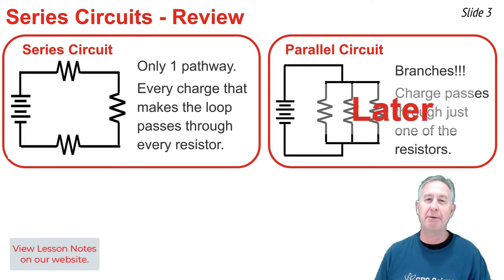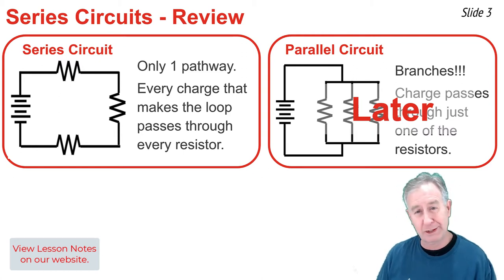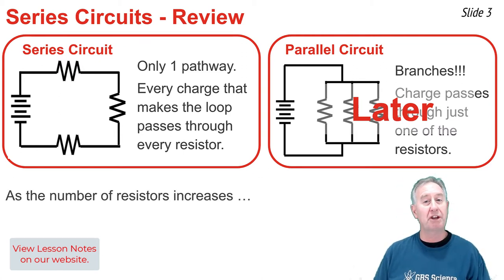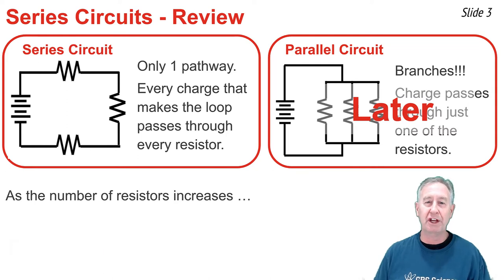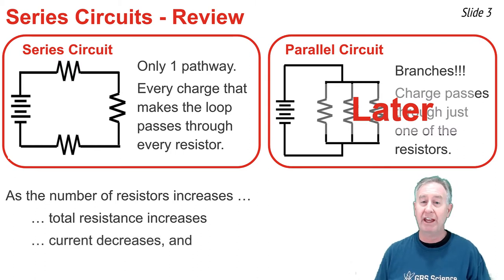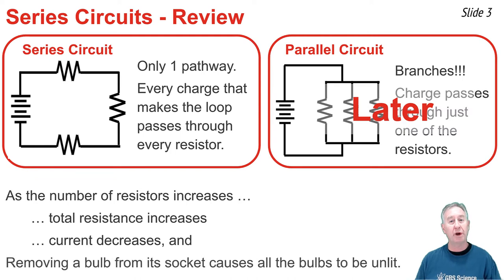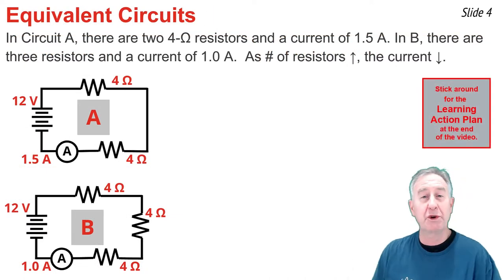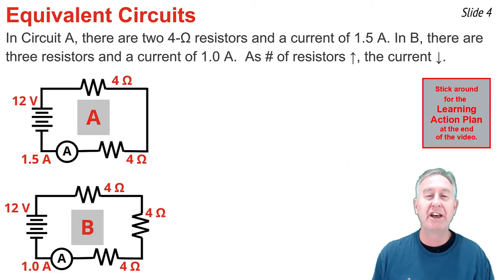I'll have much more to say about parallel circuits in a later video. In this video, our focus is on series circuits. As you increase the number of resistors in a series circuit, the overall resistance increases, which causes the total amount of current in that circuit to decrease, and if we were to remove a bulb from one of the sockets in that circuit, the other light bulbs would be unlit.